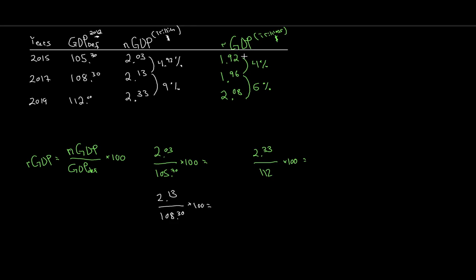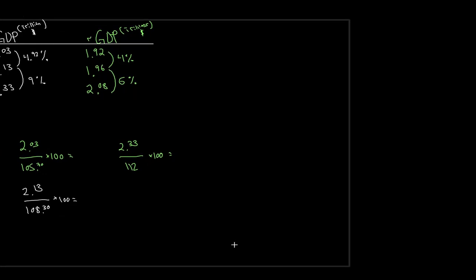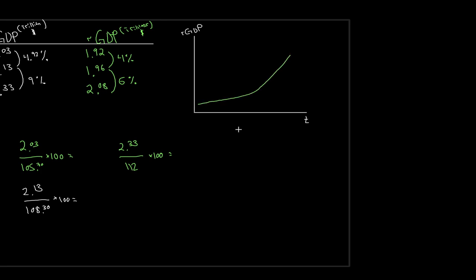That covers the distinction between real and nominal GDP. We can also look at the business cycle and how these things move through time. If we graph real GDP on the vertical axis and time on the horizontal, over our short period from 2015 to 2017 to 2019, we see a small increase, then a slightly sharper increase.